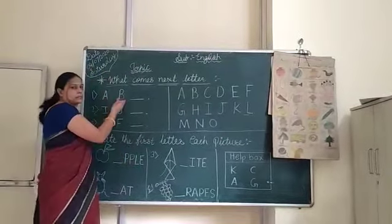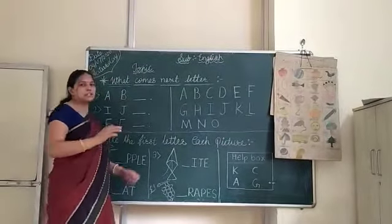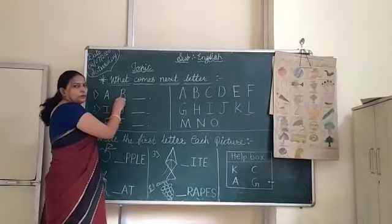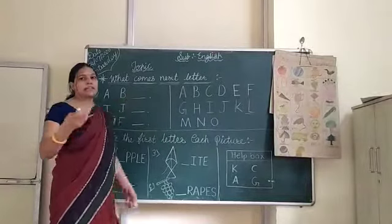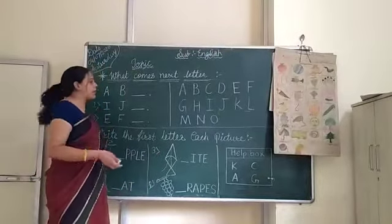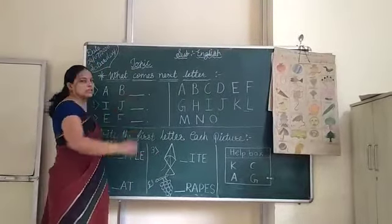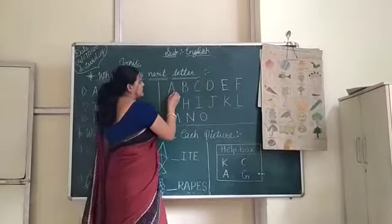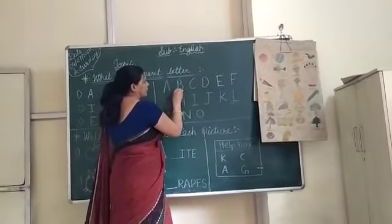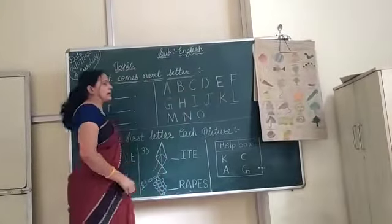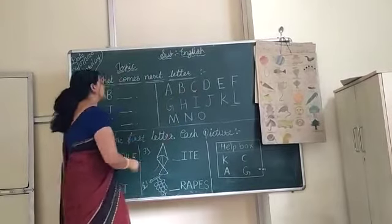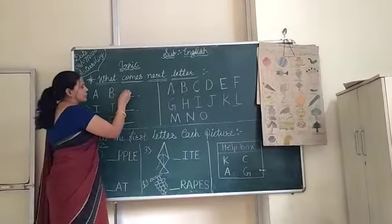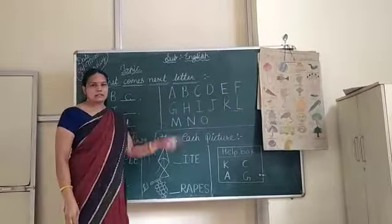Some letters are there. First we speak: A for apple, B for ball, and the next letter is missing. So how do we find out what letter comes next? We speak some alphabets: A for apple, B for ball, C for cat. So C comes after B. A for apple, B for ball, and then after comes C for cat. So C is the letter there.